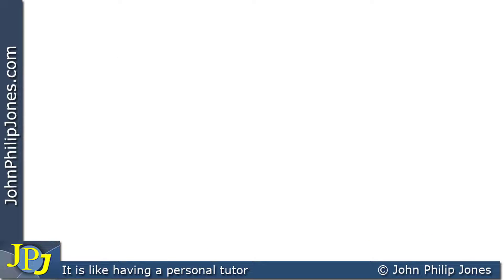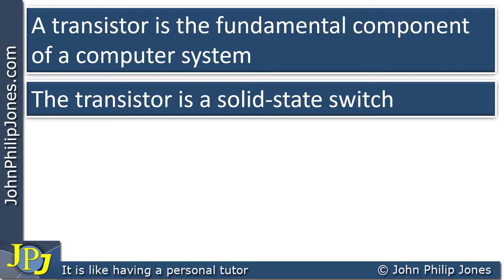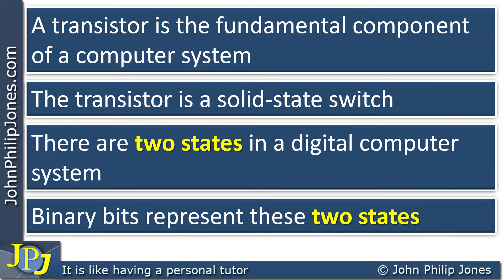Let's conclude this video by looking at some of the things we've introduced. The first thing to realize is that a transistor is the fundamental component of a computer system. The transistor is a solid state switch, which means it has no moving parts, and it is controlled by low and high pulses within the computer. There are two states in a digital computer system: a high pulse and a low pulse, on and off — and of course, zero and one representing these two states. So we can conclude by saying binary bits represent these two states.